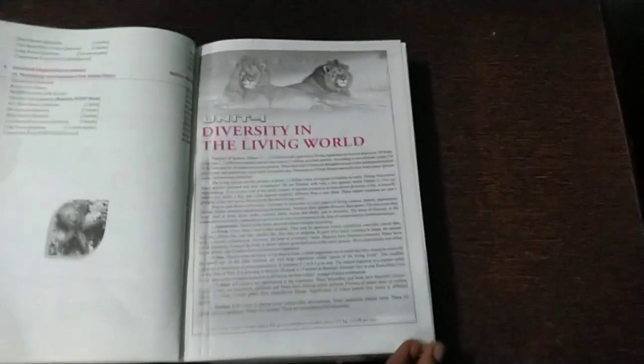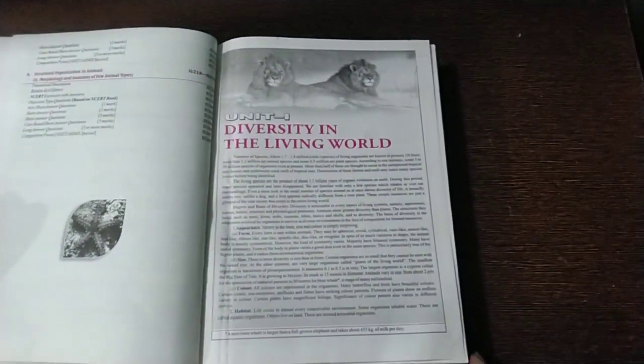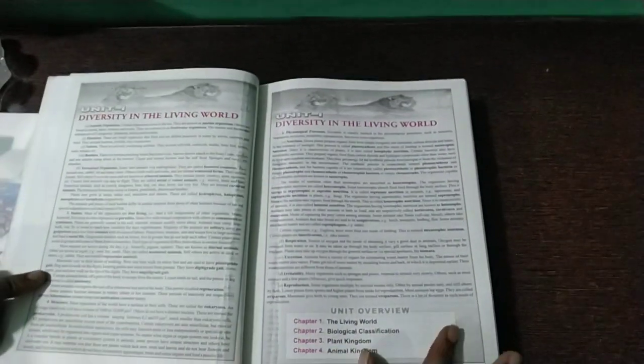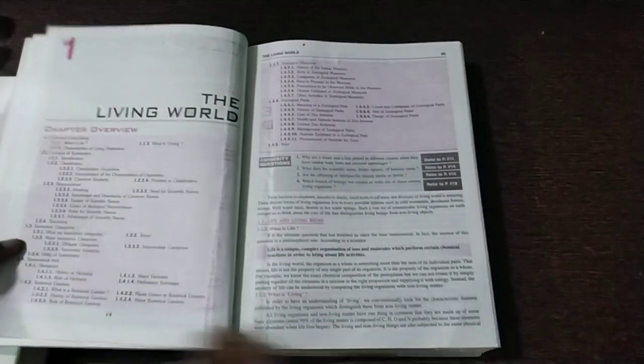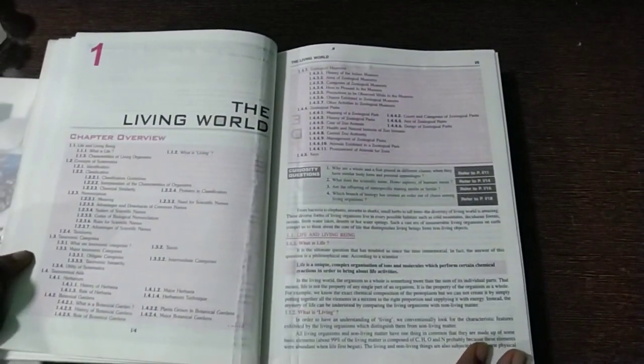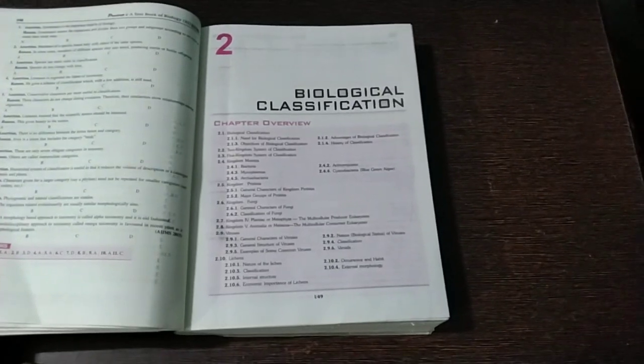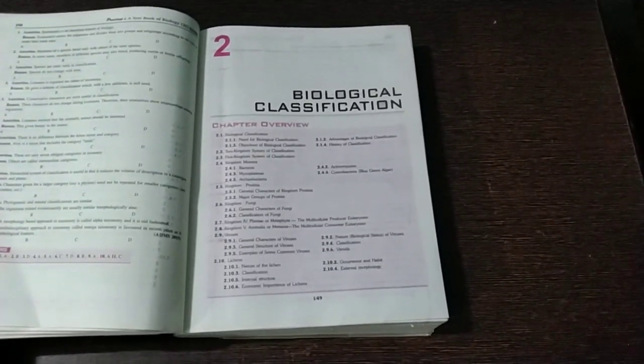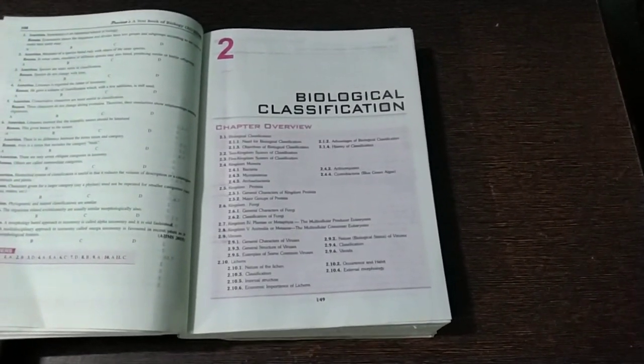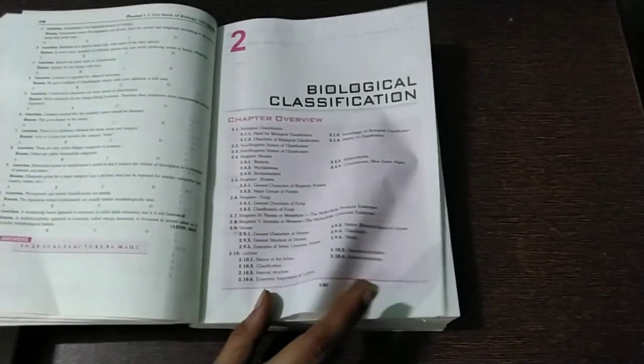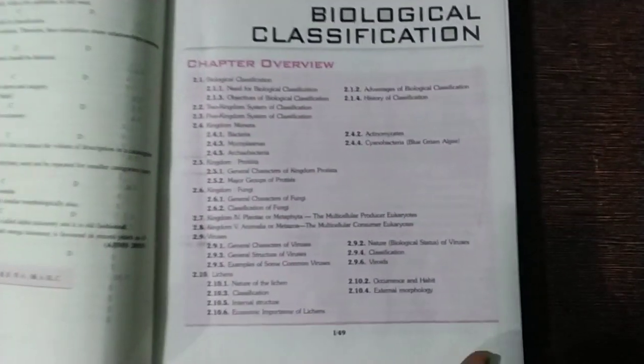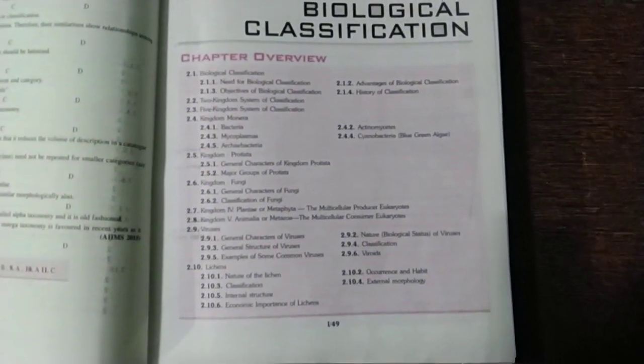This is unit 1, diversity in the living world. Okay, this is the chapter review of the living world. So let's come to the second chapter as I've already read this chapter. So I can easily tell you all the advantages of this book. So this is the chapter overview. You can see all the topics are given in this.